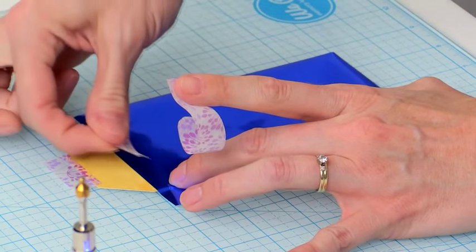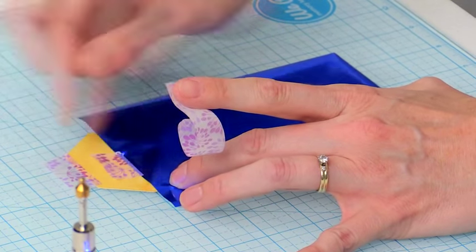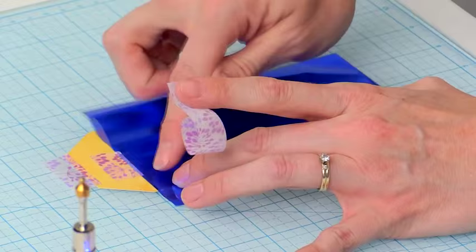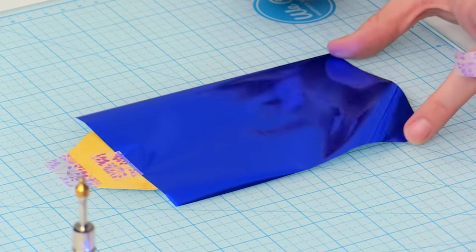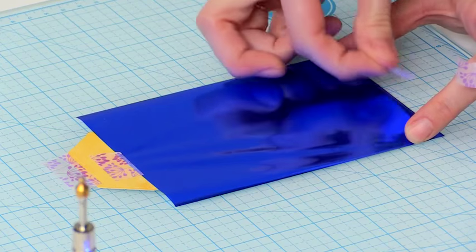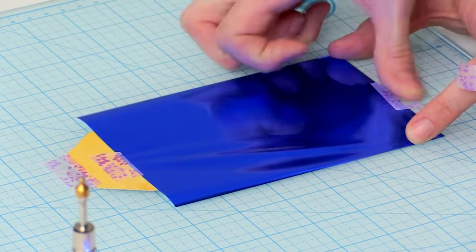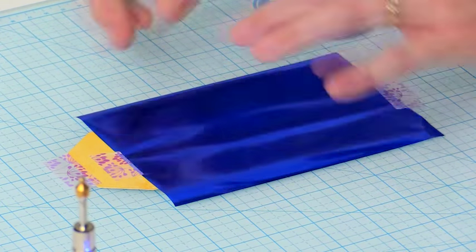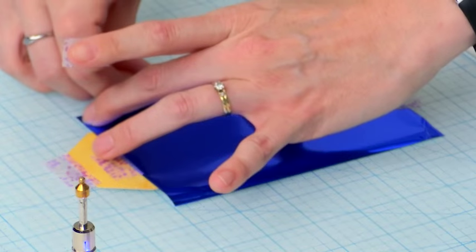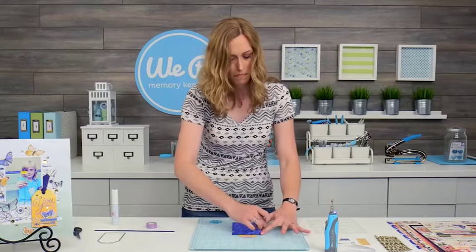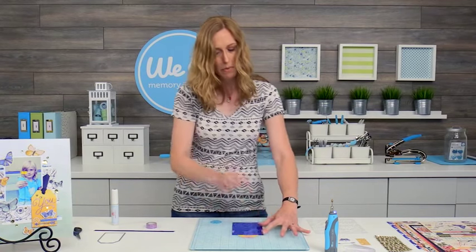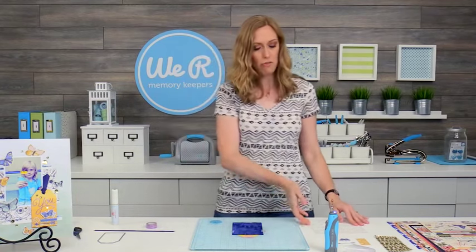I'm just going to put a piece here at the top kind of just right along the edge so that I can use the pen up there and then I'm going to pull it kind of taut with my fingers and put some tape down here and do the same thing on the sides and that's just going to help you get the best application of the foil.